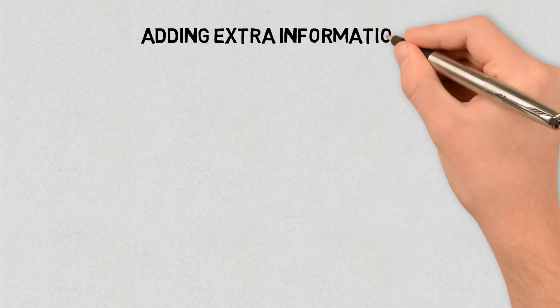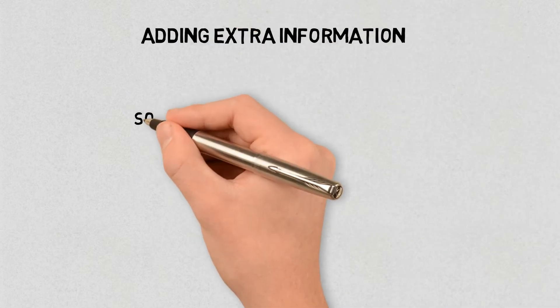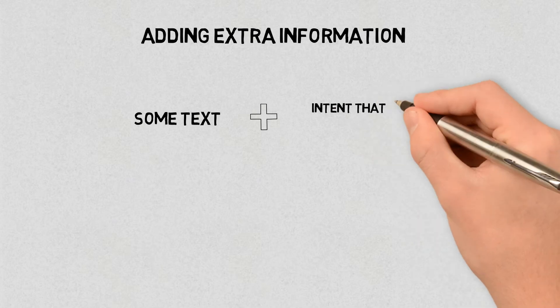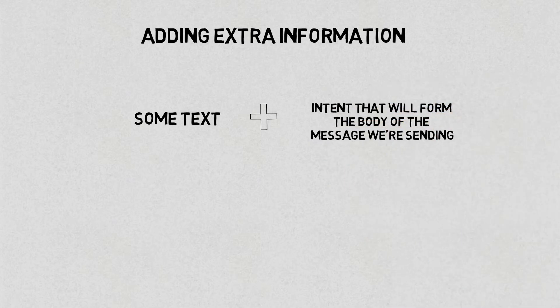Adding extra information. Once you have specified the action you want to use, you can add extra information to it. We want to pass some text with the intent that will form the body of the message we're sending. To do this, you use the following lines of code.